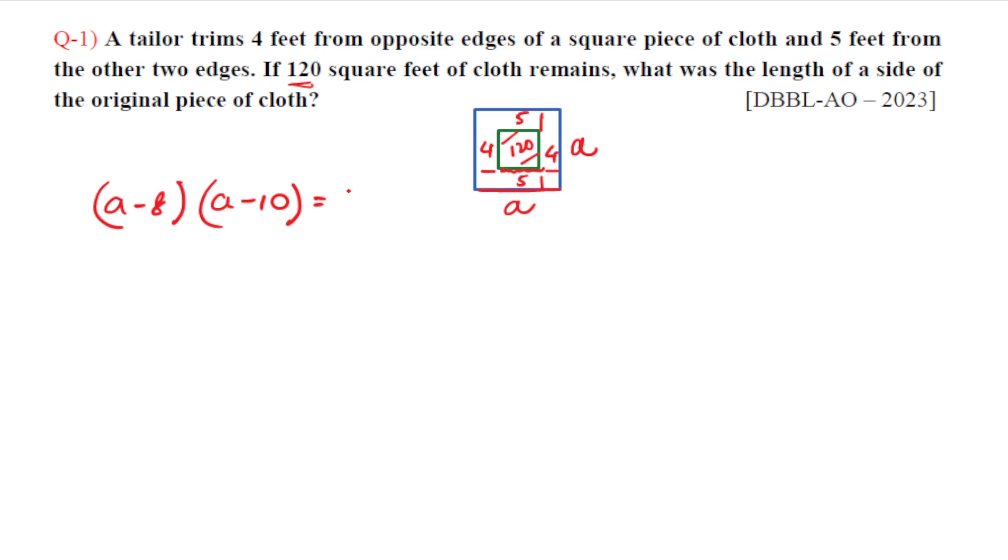So this equals 120. Simplifying: a squared minus 10a minus 8a plus 80 equals 120. That gives us a squared minus 18a plus 80 equals 120, or a squared minus 18a minus 40 equals 0. Using middle term factorization.